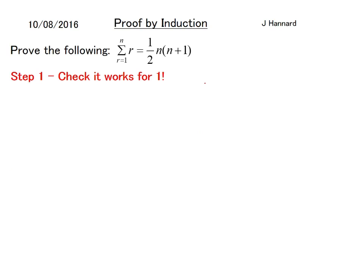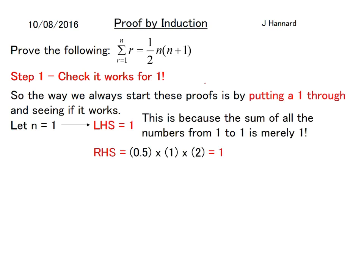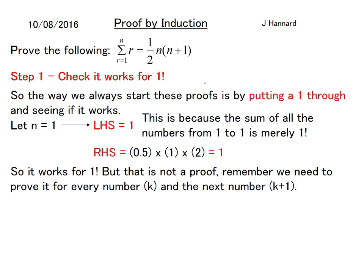Step 1, we always check it works for 1 because it would just be futile if it didn't work for 1. So let n equal 1. The LHS would just be 1 because the sum of all the numbers from 1 to 1 is just 1. And on the right hand side it would be a half times 1 times 2 which is a half of 2 which is 1. So both sides are equal therefore it works for 1.